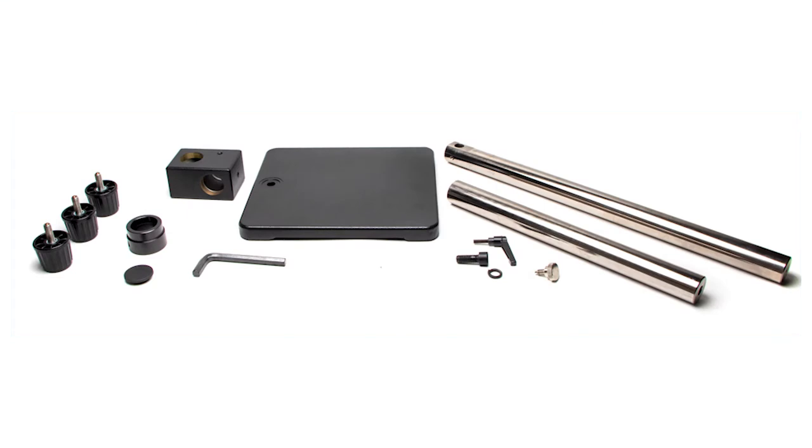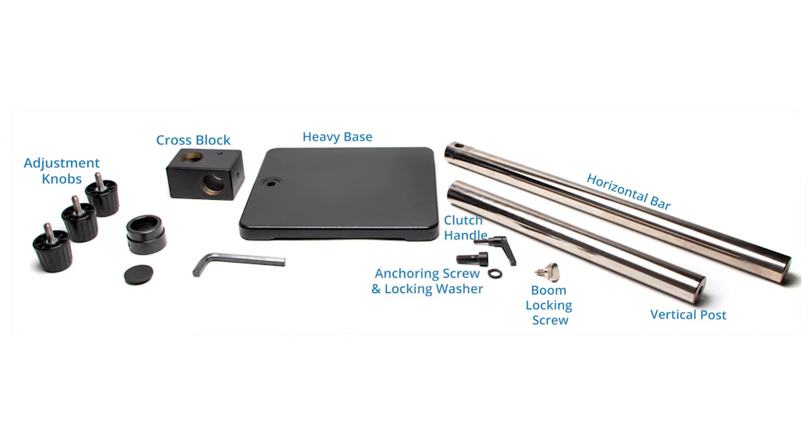These are the components of the boom stand: three adjustment knobs, a cross block, one heavy base, a horizontal bar, a vertical post, a boom locking screw, a clutch handle, an anchoring screw with a locking washer, a hex key, a guard ring, and a post cap.